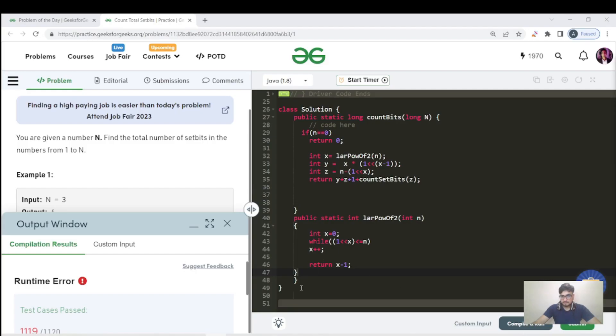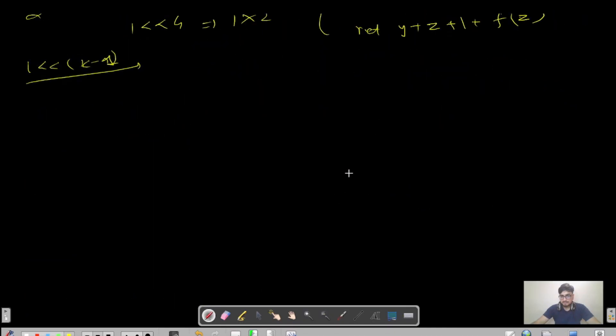Here's the code. First we find x, which is the largest power of 2 for this n. We have a y variable which stores x times 2 power x minus 1. Then we have z variable which is n minus 2 power x. We return this result. I hope you're getting the point.